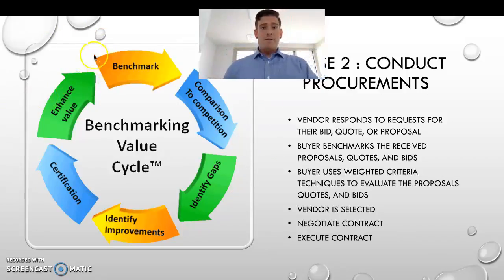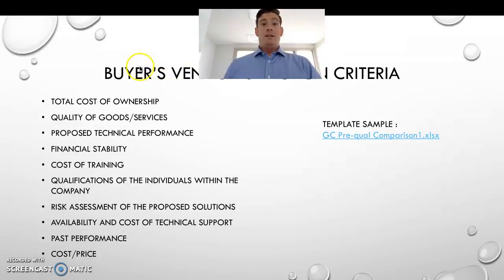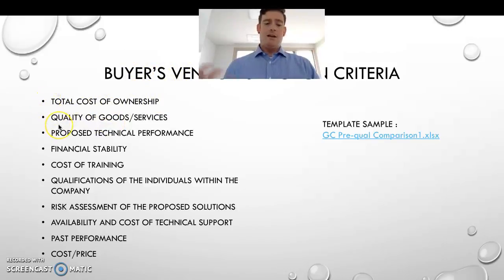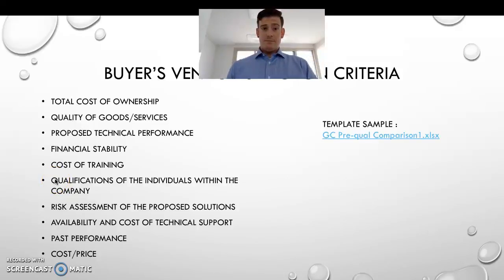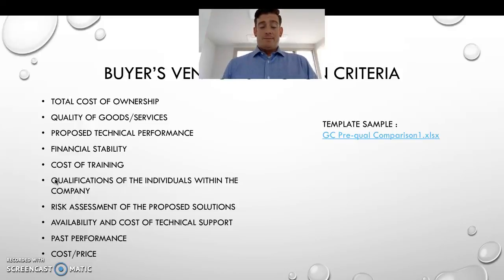Here's a flow chart of the benchmarking value cycle. Now, buyer vendor selection criteria - these are some of the things buyers would have in their selection criteria to determine who's the best fit: total cost of ownership, quality of goods and services, proposed technical performance, financial stability, cost of training, qualifications of individuals within the company, risk assessment of proposed solutions, availability and cost of technical support, past performance, and cost and price.